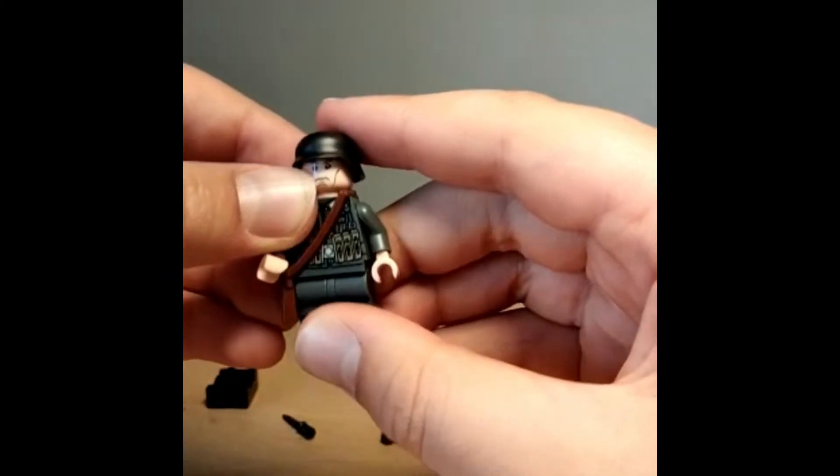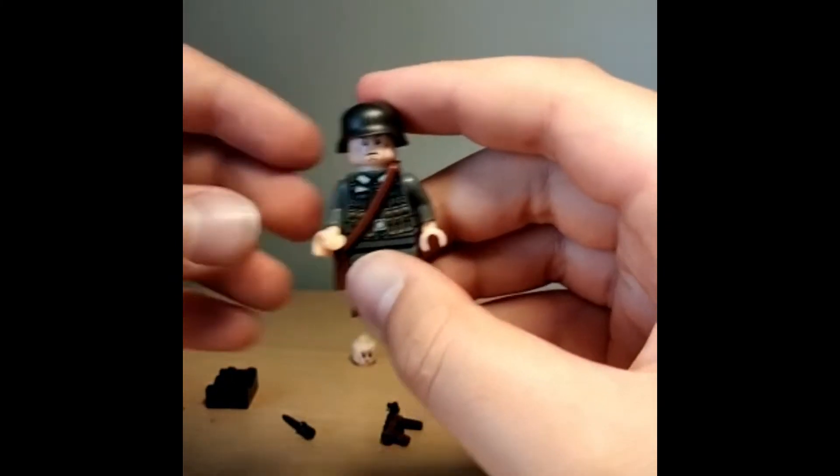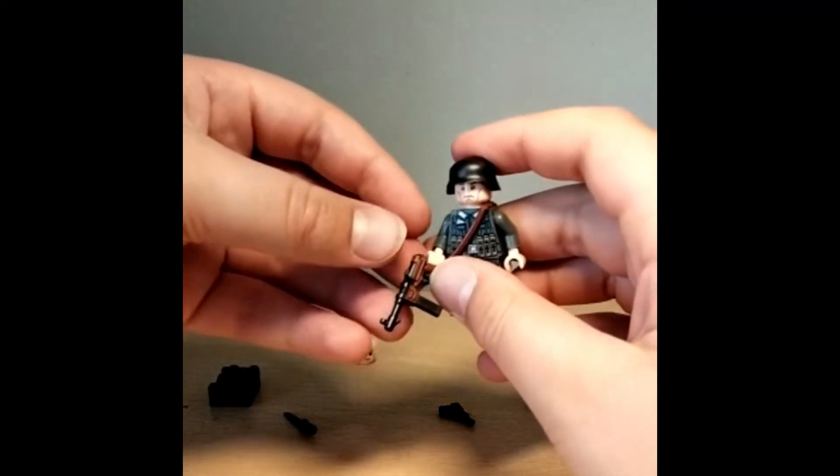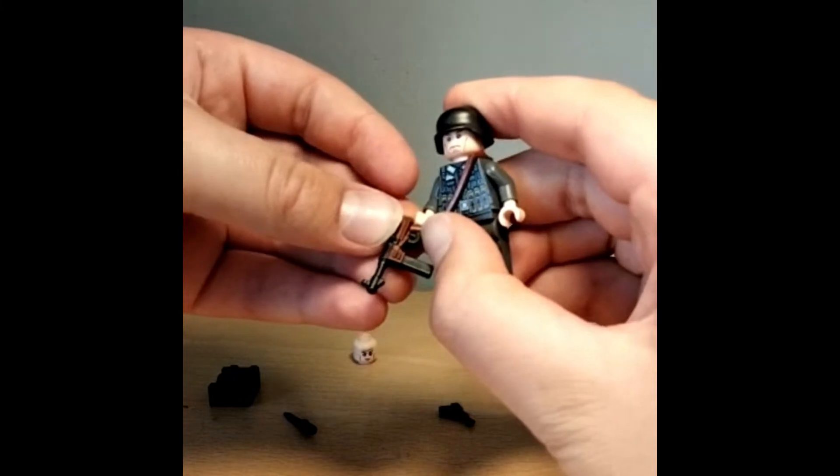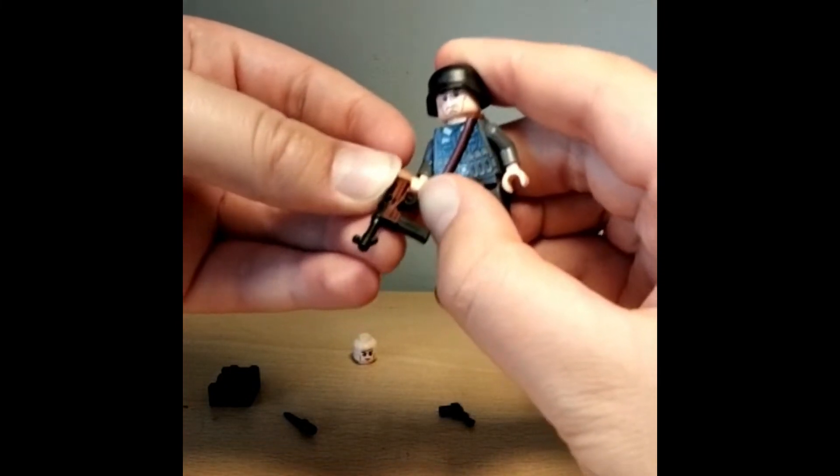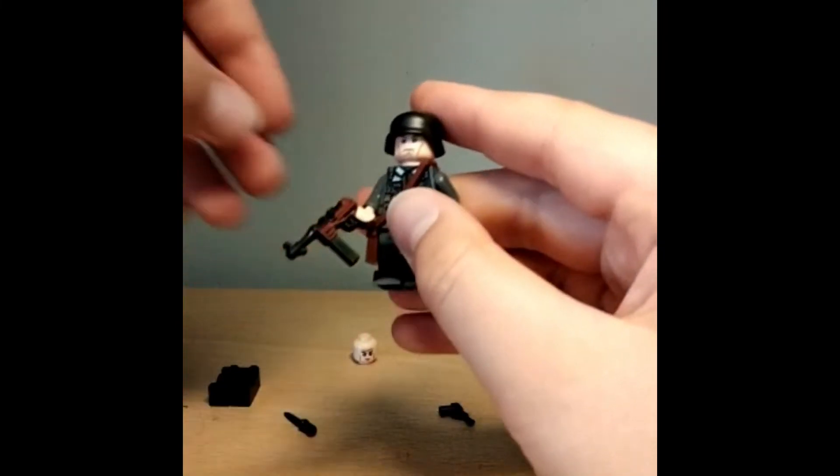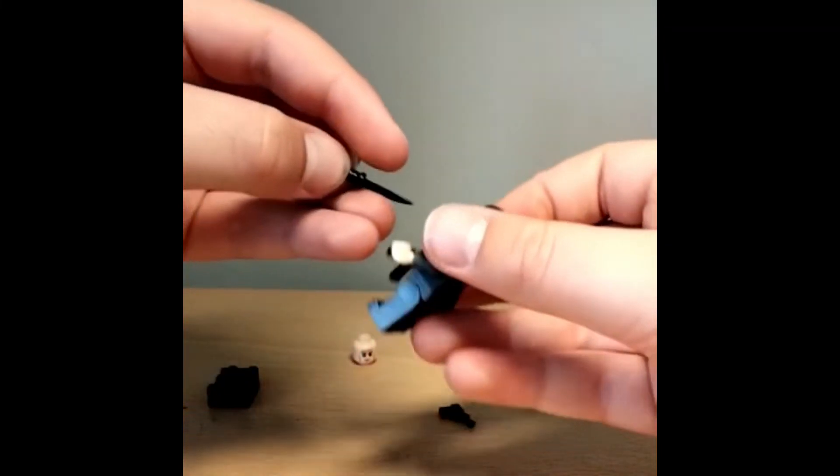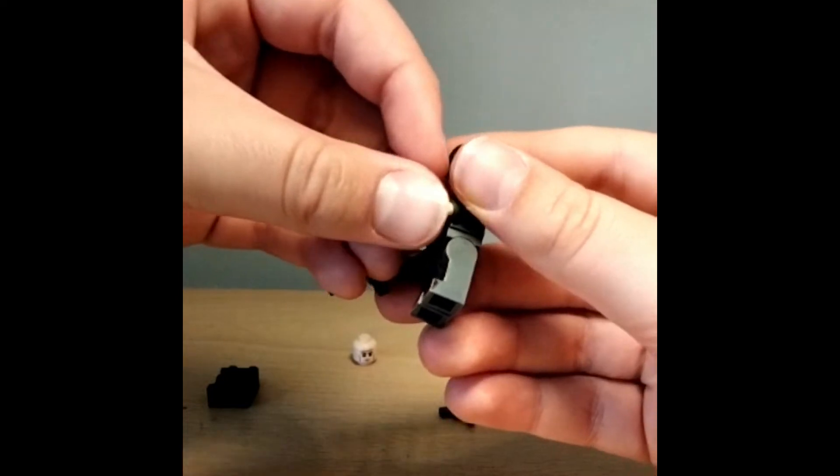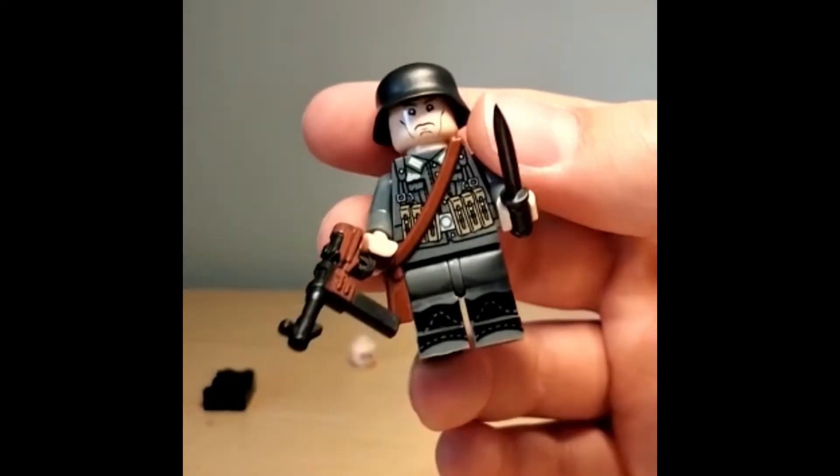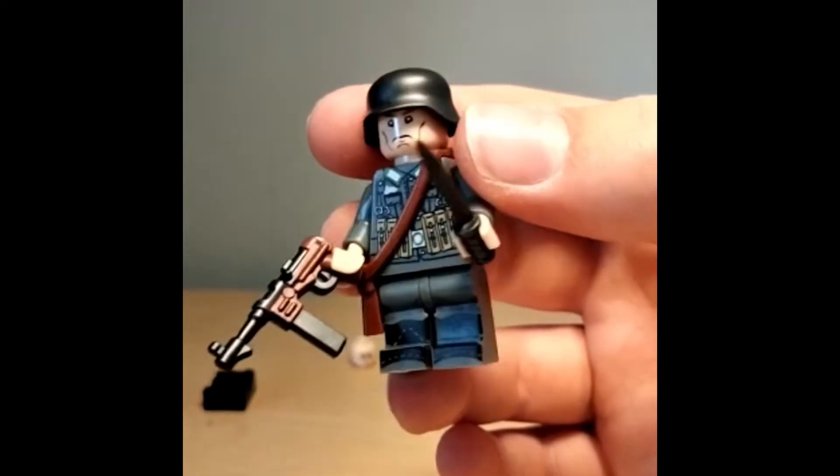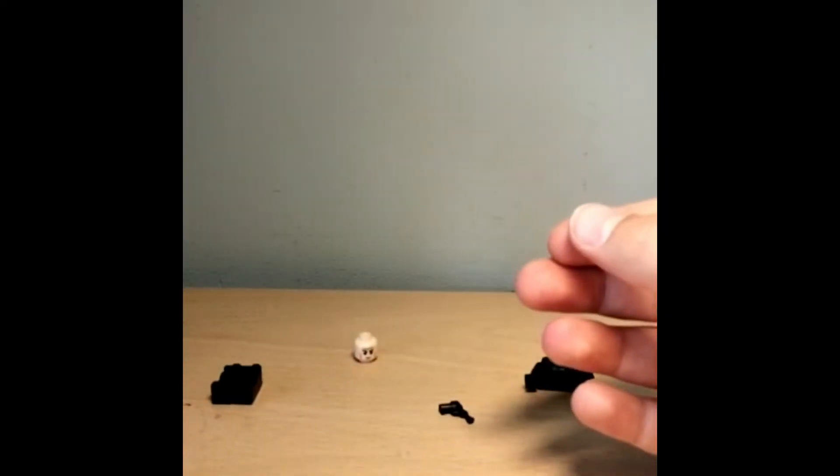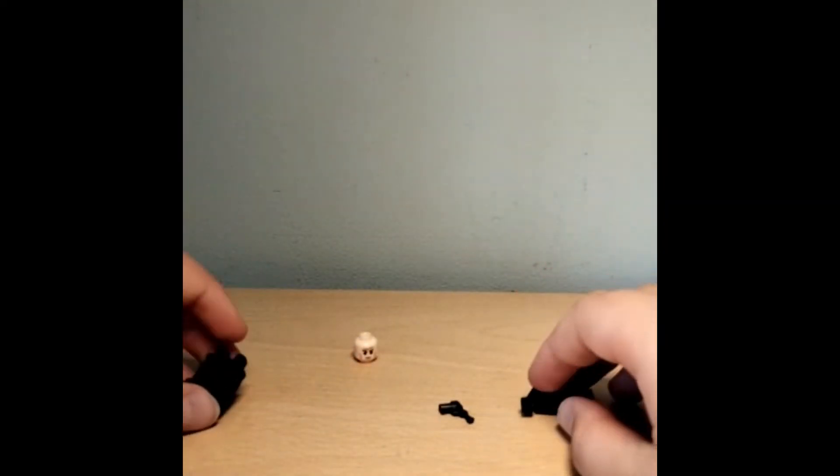So it looks something like that. I would recommend using the Colonel Dovchenko face. I'm going to stick a German gun on him and then a little knife. And there we have it, the first German soldier.